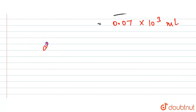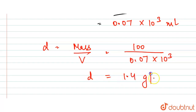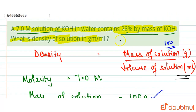So the density equals mass divided by volume: 100 grams divided by 70 milliliters gives 1.4 grams per milliliter. Therefore, the answer is 1.4 grams per milliliter.